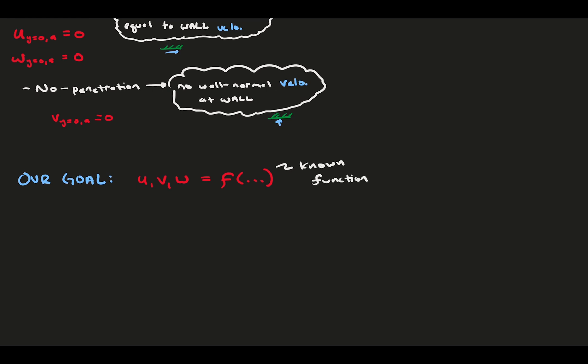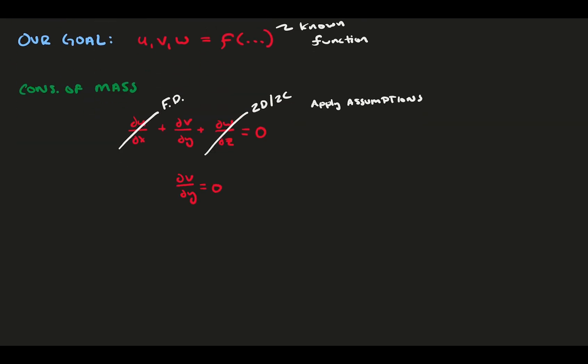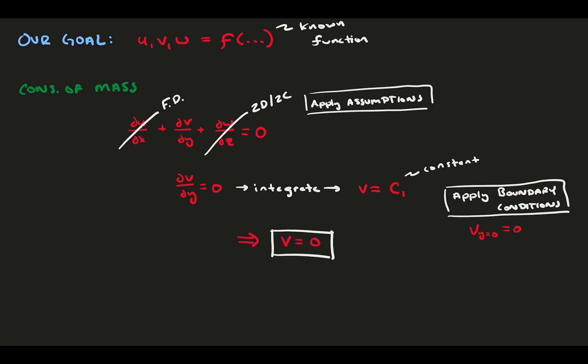Our goal here is to solve for u, v, and w, the velocity field, as known functions. To get these functions, we need to start with the simple conservation of mass. If we apply our assumptions, two terms drop out. du dx is zero because it's fully developed, and dw dz is zero for two reasons. There's no w velocity due to being two-component, and there are no changes in z due to being two-dimensional. This leaves us with dv dy equals zero, which is a common occurrence with the conservation of mass equation. If we integrate this, we get that the velocity v must be a constant with respect to y. We also know that it is a constant in x because it's fully developed, and a constant in z because it's two-dimensional, so v must just be a constant. Apply our boundary condition that v must be zero at the walls. If v is zero in one place, and is a constant, it must be zero everywhere. v equals zero.